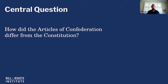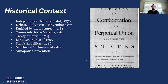The Articles of Confederation was the first governing document of the United States — in effect, it was sort of the first constitution. It was a way in which the 13 colonies, now independent states, were able to coordinate their actions and work together as a confederation. As we go through the Articles, we're also going to be thinking about how they differ from the Constitution.